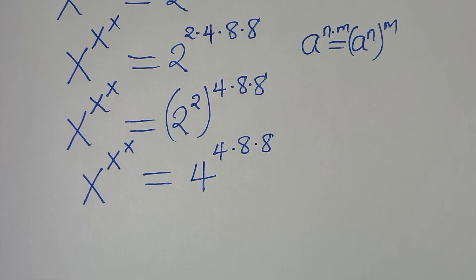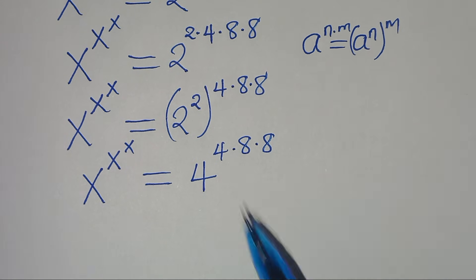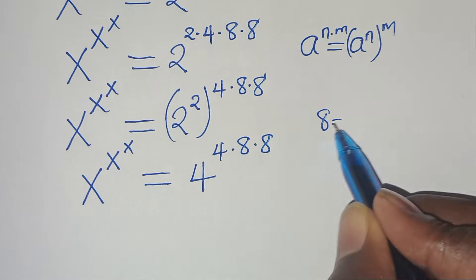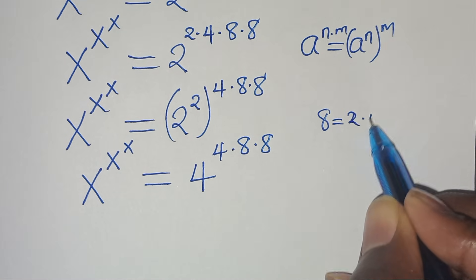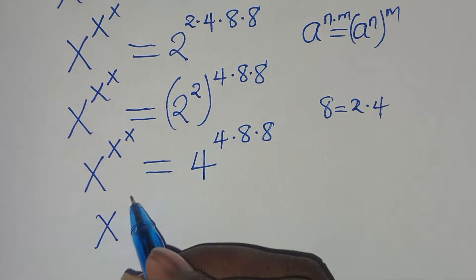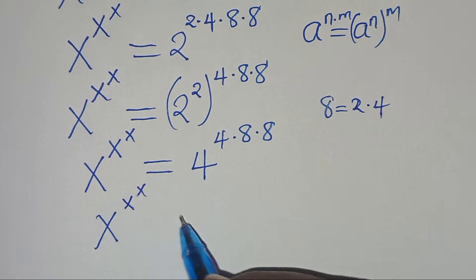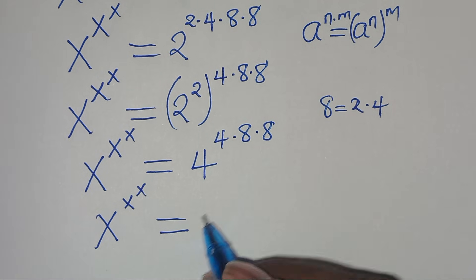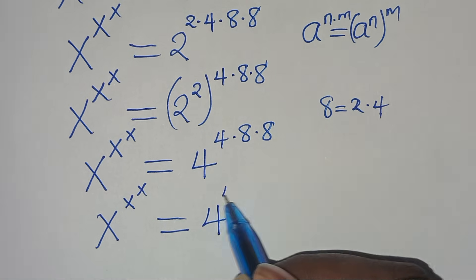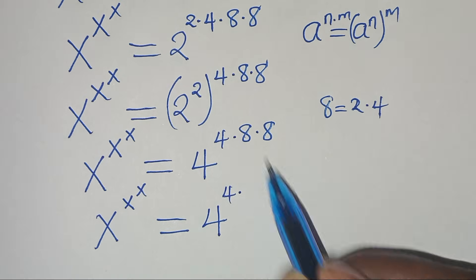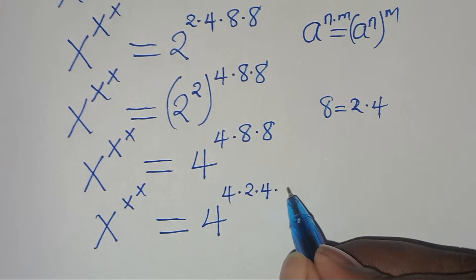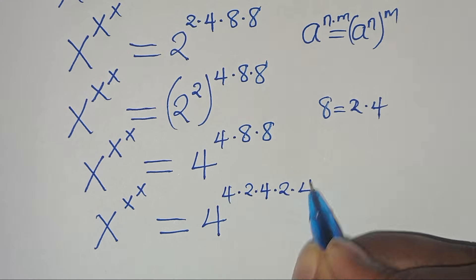Now 8 can be expressed as 2 multiplied by 4, so we have x^(x^x) = 4^(4 × (2 × 4) × (2 × 4)).